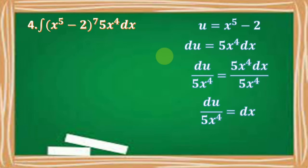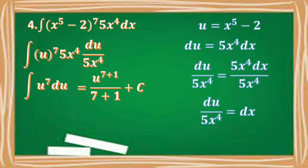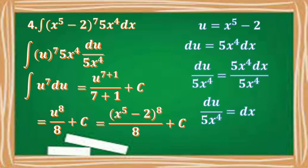Substituting u for x to the 5th minus 2 and du over 5x to the 4th for dx, we have the integral of u to the 7th times 5x to the 4th times du over 5x to the 4th. Canceling out 5x to the 4th, we have the integral of u to the 7th du. Applying the anti-differentiation rule, we have u to the 8th over 8 plus c. Substituting back, we have the quantity x to the 5th minus 2 to the 8th power all over 8 plus c.